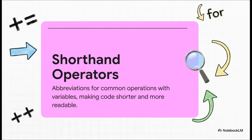Well, the answer is something called shorthand operators. Honestly, the best way to think of them is like abbreviations or nicknames for the most common things you do with variables. Their goal is super simple, make your code shorter. And once you get the hang of them, way easier to read at a quick glance.